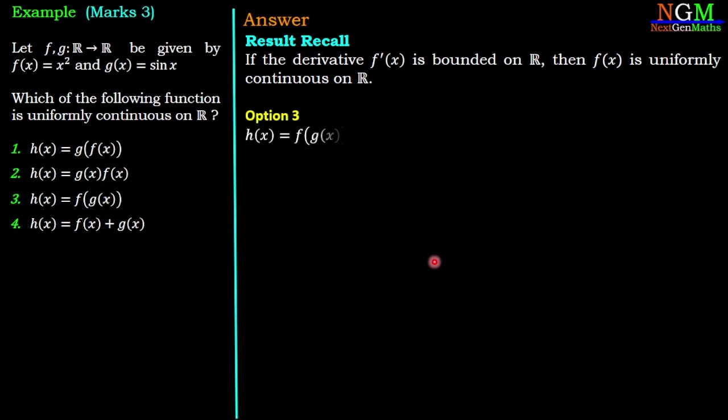Now option number three: h(x) = f(g(x)). So g(x) = sin x. So f(sin x) is square of sin x that means sin²x.